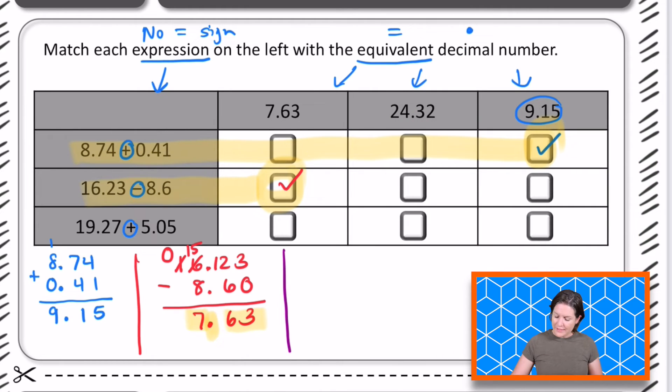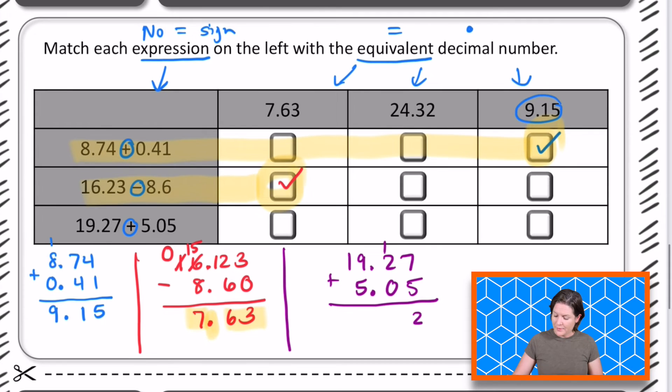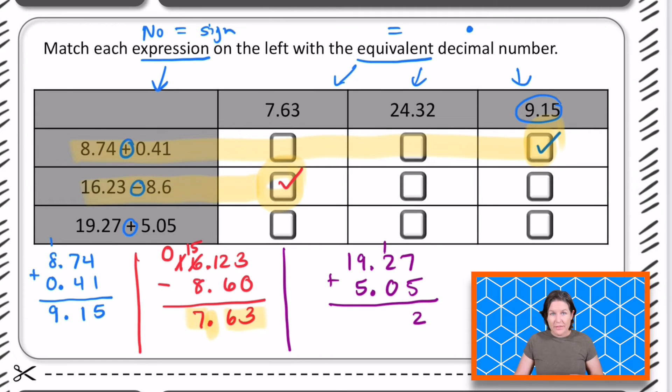For this final one, we have 19 and 27 hundredths plus. Let's make sure we line up our decimals. We have 5, 0, 5. 5 and 5 hundredths. So 7 hundredths plus 5 hundredths is 12 hundredths. Good. 1 tenth plus 2 tenths is 3 tenths. Bring down our decimal.